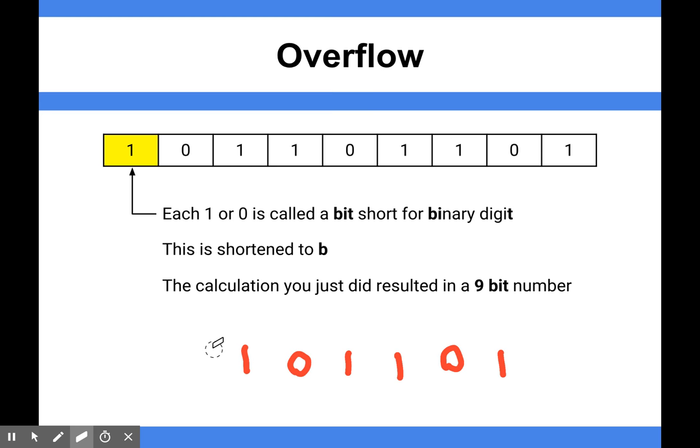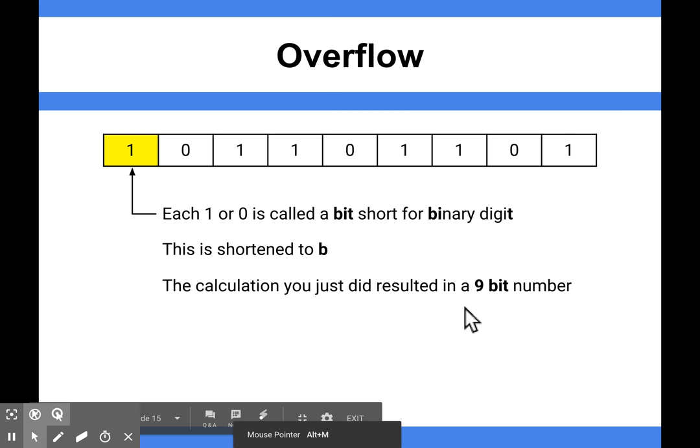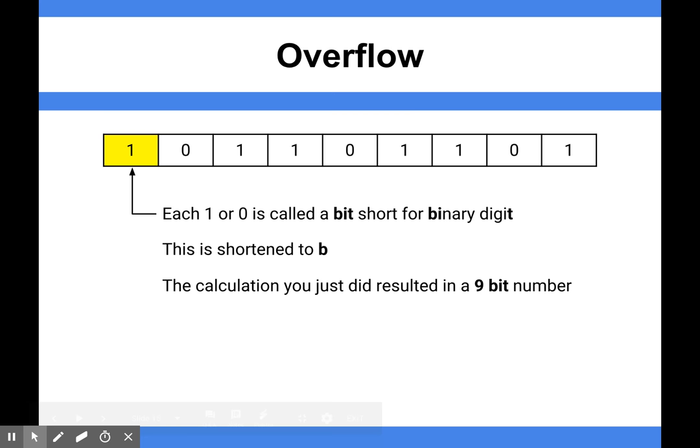As you can see from the words on this slide, it says each 1 or 0 is known as a bit of data, and I'm sure hopefully you know that already. If you ever see, you can see that shortened to just the letter B. So you can see 9B referencing 9 bit, 8B, 8 bit.